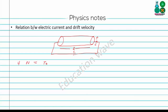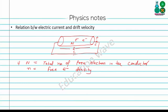Here, capital N is the total number of free electrons in the conductor, small n is the free electron density, and T is the time taken by an electron to travel the full length L of the conductor, which is equal to L divided by vd (drift velocity).